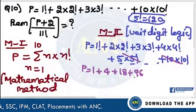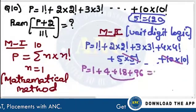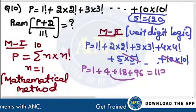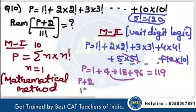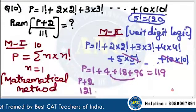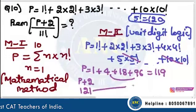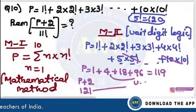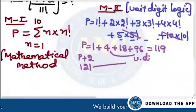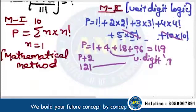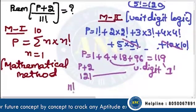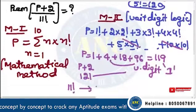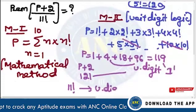Which is nothing but 1 + 4 + 18 + 96 = 119. So P plus 2 is nothing but 121. Unit digit of 121 is 1. And 11 factorial has unit digit 0.